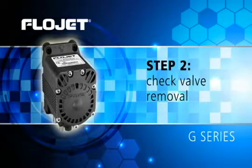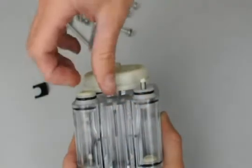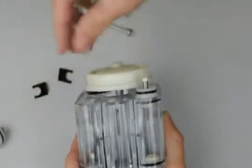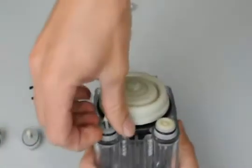The next step is going to be removing the check valves. This can be done easily with your fingers or carefully with a flat head screwdriver, but before we do, the thing to note is the direction the check valves are facing. This is important because when we install the new check valves they need to be installed in the same direction.